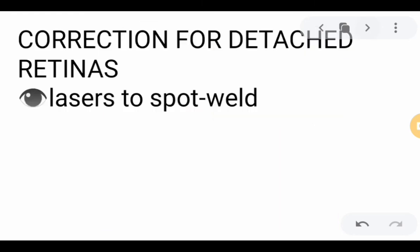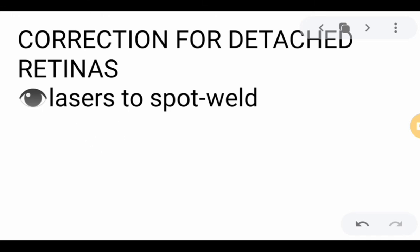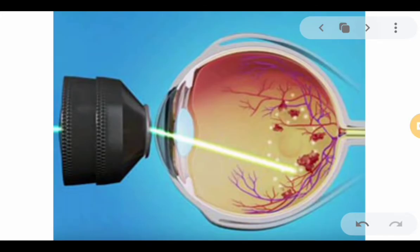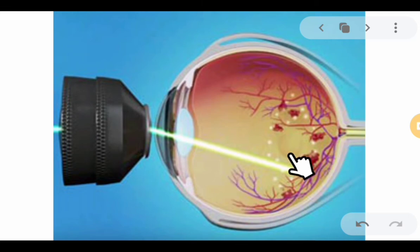Next is the correction for detached retinas. The treatment uses laser technology to spot-weld the retina to the back of the eye, as mentioned in a previous lecture. The laser connects the detached portion back to the eye wall. This is the technology for reattachment of the retina.